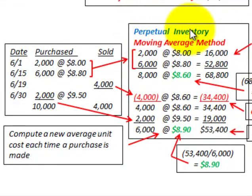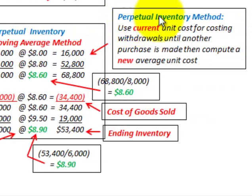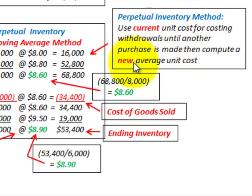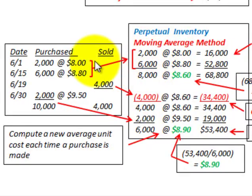Now let's look at the perpetual inventory method, where we use the moving average method. With the perpetual inventory method, you use the current unit cost for costing withdrawals or sales until another purchase is made, then you compute a new average unit cost. So each time you make a purchase, you have to compute a new average unit cost.